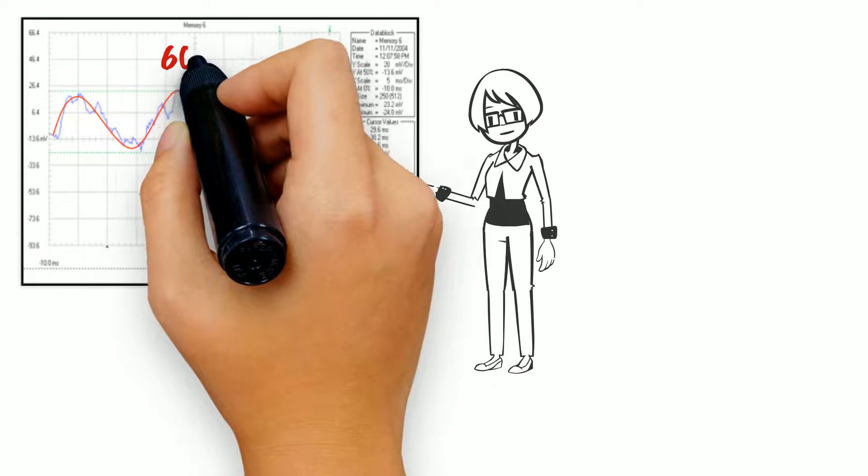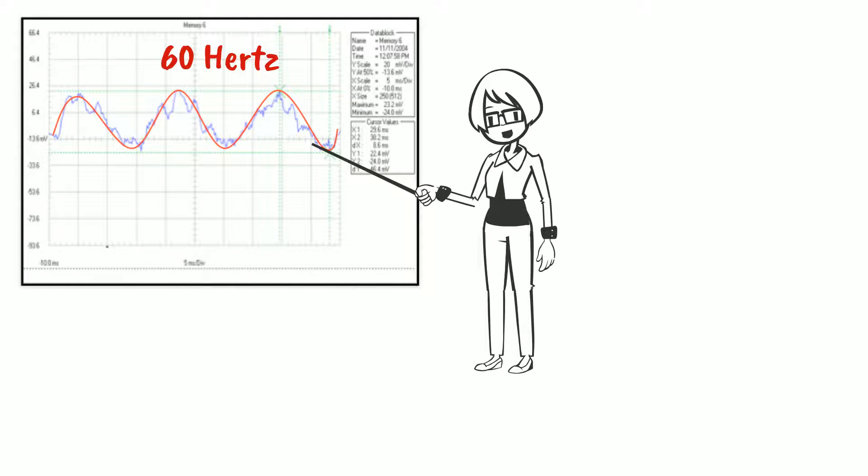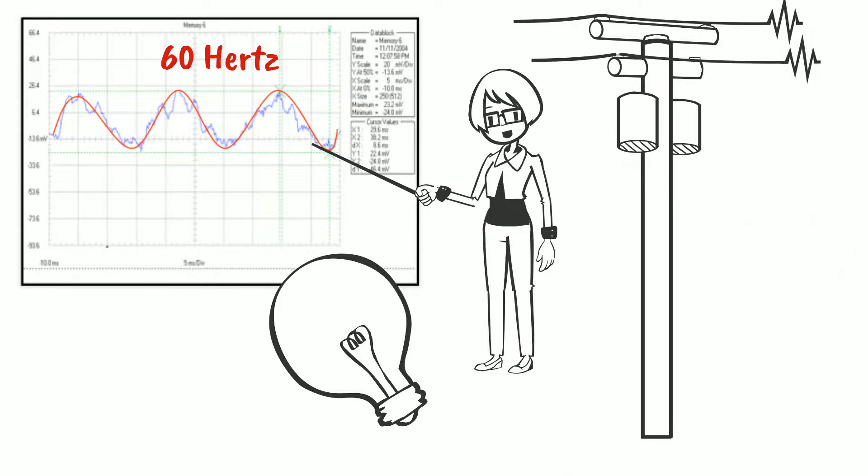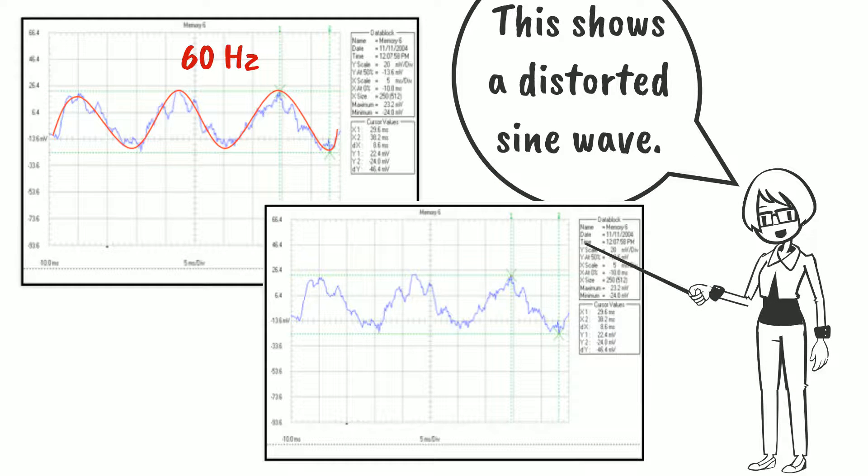You will notice two patterns. The pattern in red is at 60 hertz or 60 cycles per second and is the frequency we use for electricity in North America. The second pattern in blue shows a distorted sine wave with thousands of cycles per second.